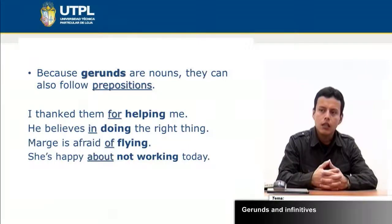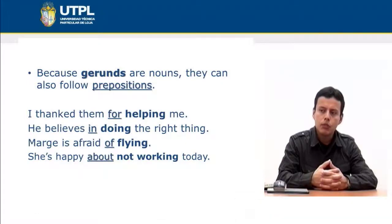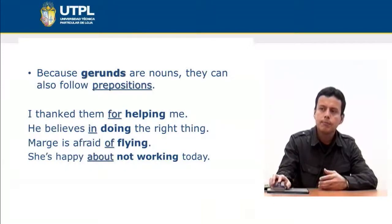In the last example: 'She's happy about not working today.' Here 'about' is the preposition, and after it we use a negative gerund: 'not working.' This demonstrates the use of a negative gerund following a preposition.